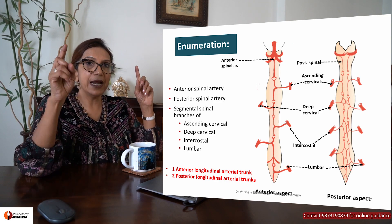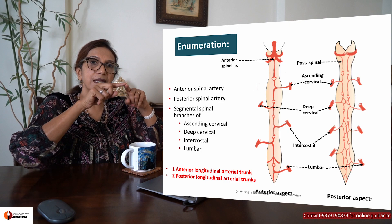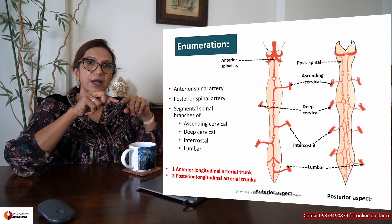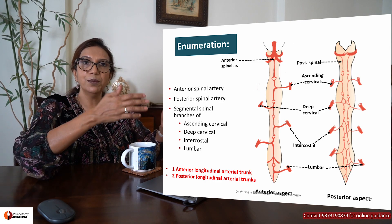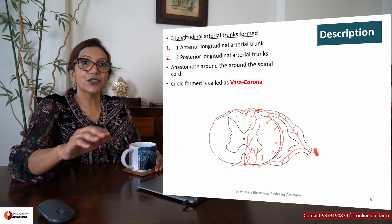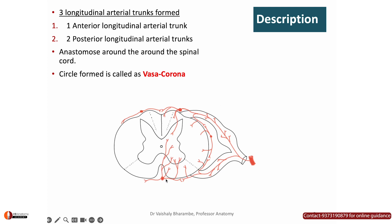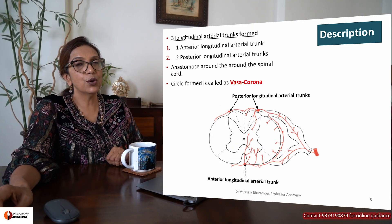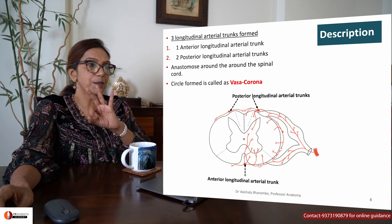The anterior spinal artery receives additional blood supply resulting in the creation of a single artery in the midline — this is called the anterior longitudinal arterial trunk. The two posterior spinal arteries do not unite, and therefore there are two posterior longitudinal arterial trunks. So in total, there are three longitudinal arterial trunks present.